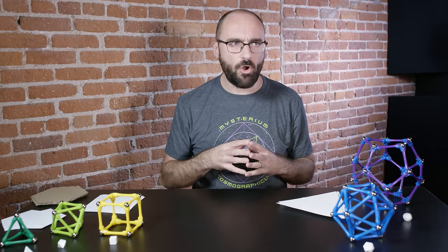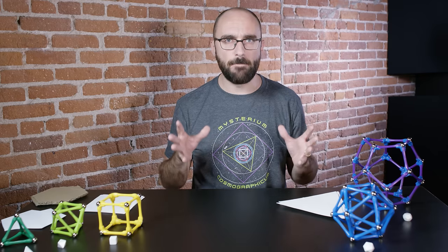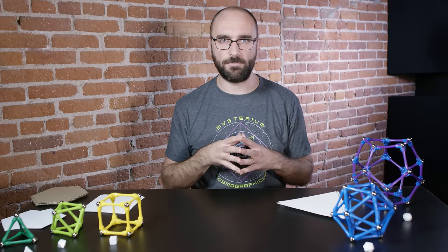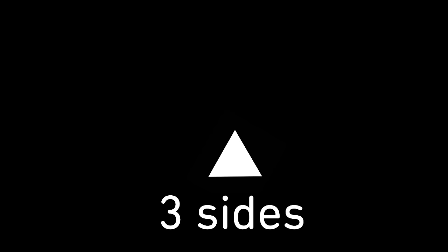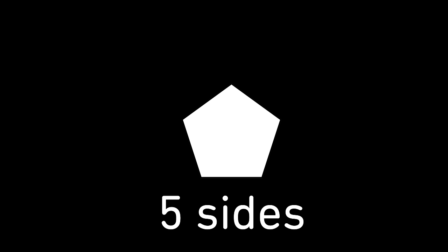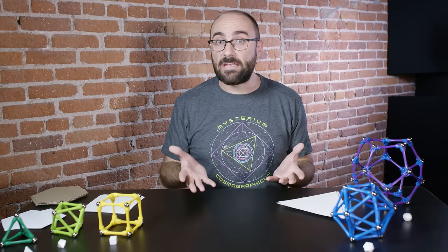In two dimensions, there are an infinite number of regular polytopes. You can just keep adding sides. Equilateral triangle, square, regular pentagon, regular hexagon, regular heptagon, regular octagon, regular kiliagon, regular megagon. There's no end.